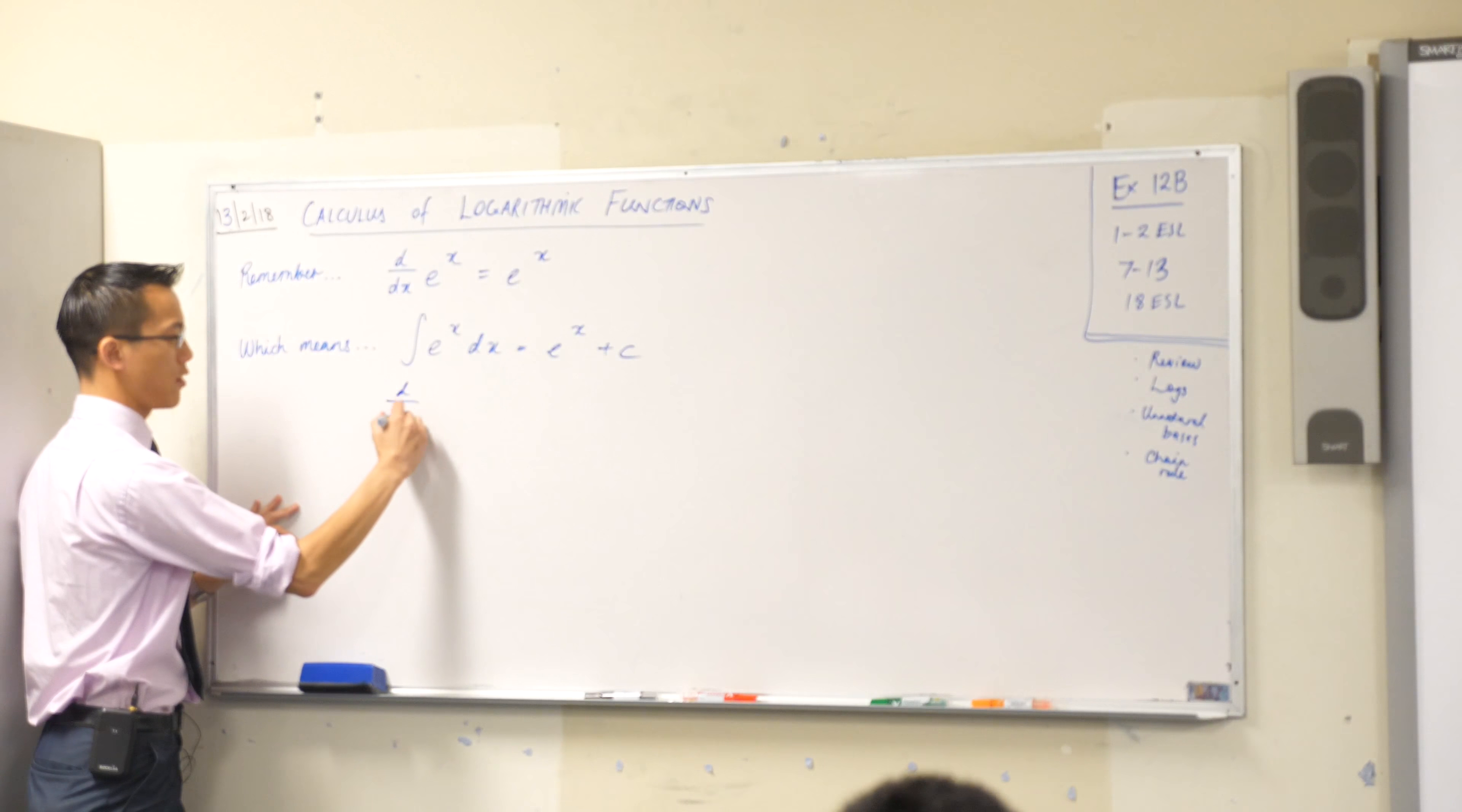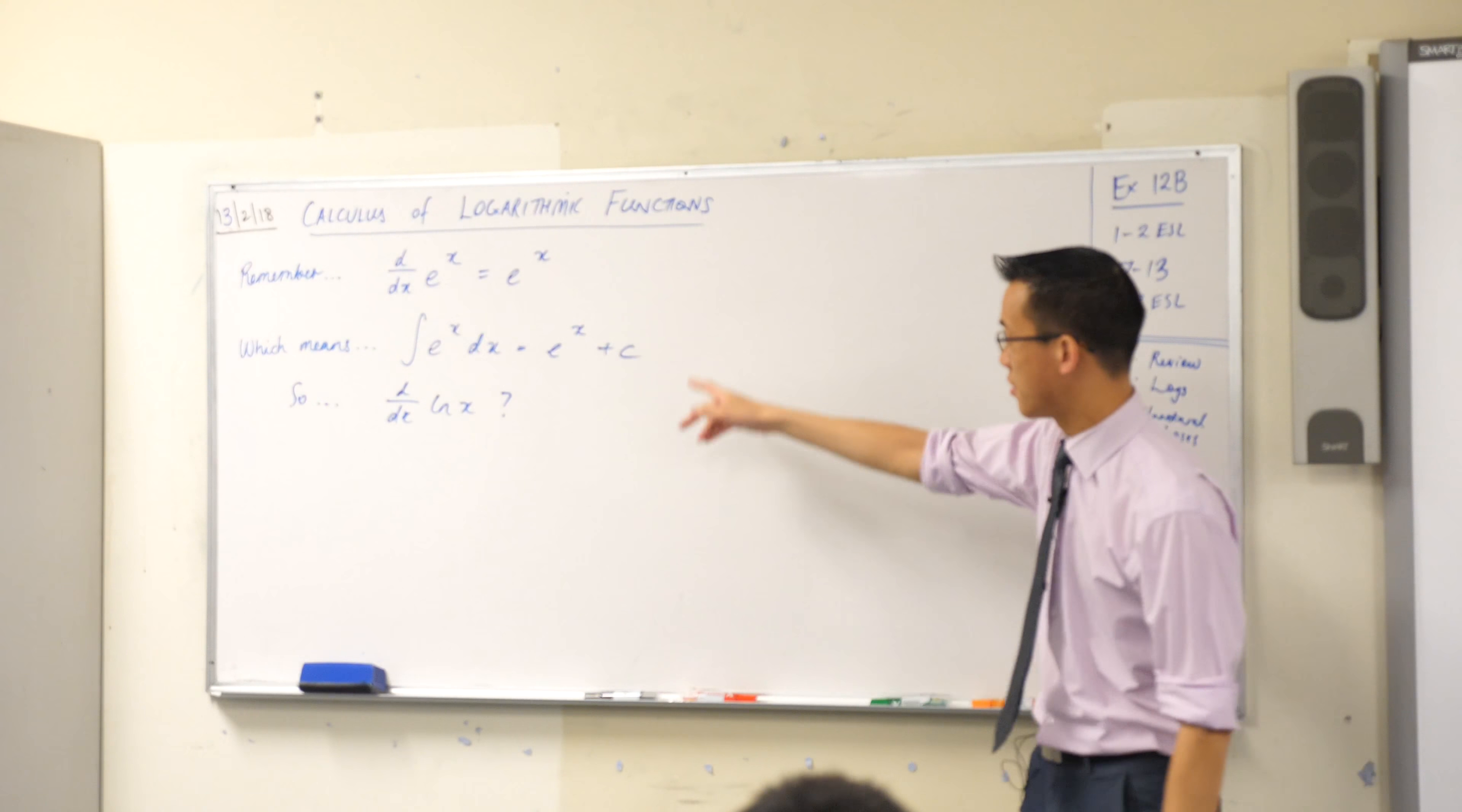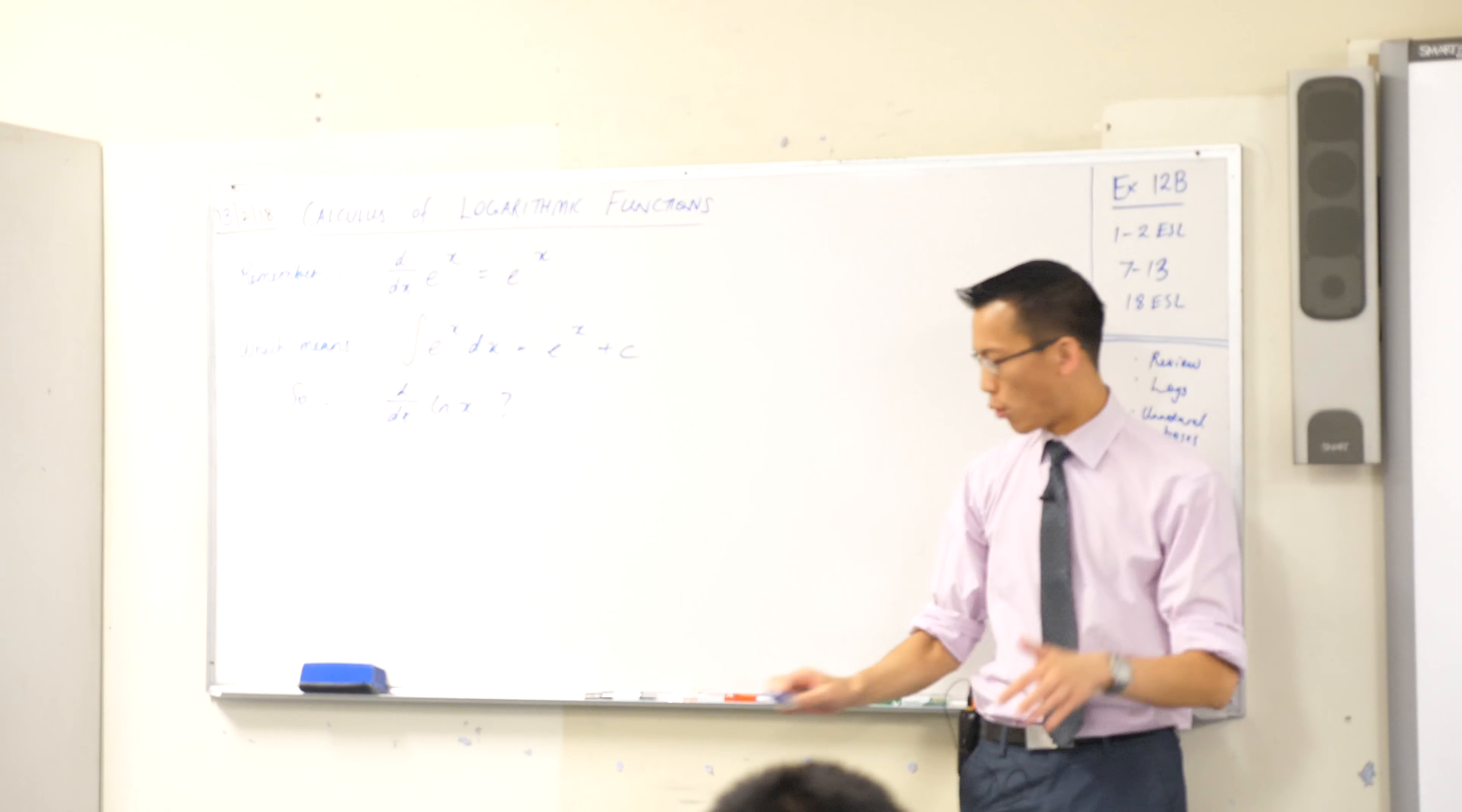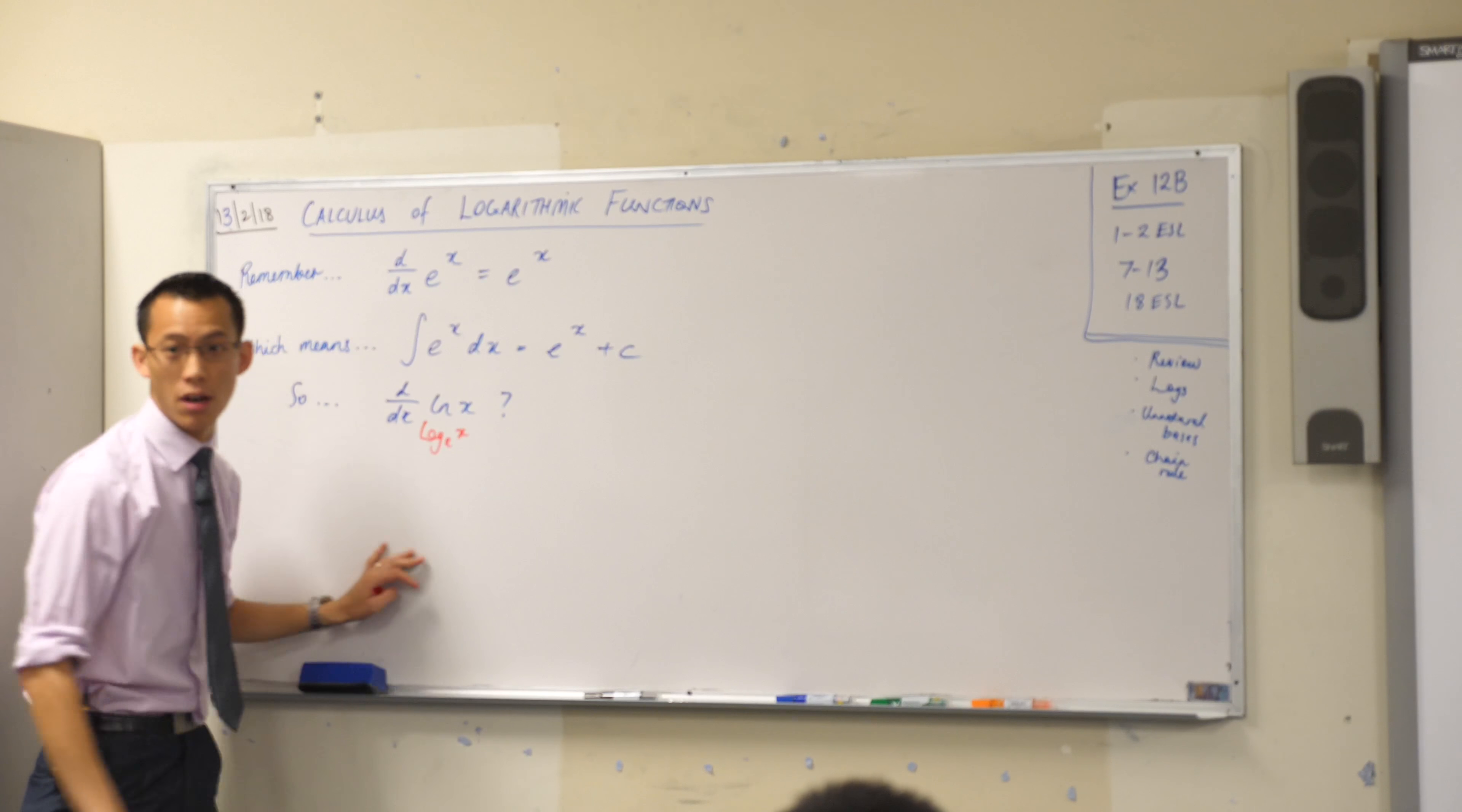What is the derivative of the natural log of x? We're going to start with the natural log because, as you can see, everything is nice and neat with the natural base of e. Here's an important time to remind you that notation with logs is not the greatest. Ln stands for log natural. It's the base of e. So this is the same as log base e of x.